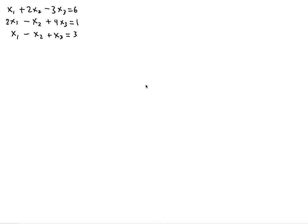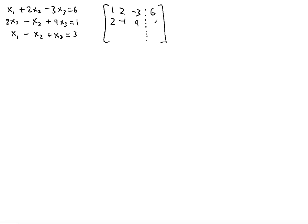In the previous video we solved the system using Gaussian elimination. In this video we're going to use Gauss-Jordan elimination. You start the same way — make a matrix, then write the coefficients for each variable. The first row is 1, 2, negative 3, and this is an augmented matrix because there's an equal sign, so you make a dotted line. The second row is 2, negative 1, 4, 1, and the last row is negative 1, 1, 3.